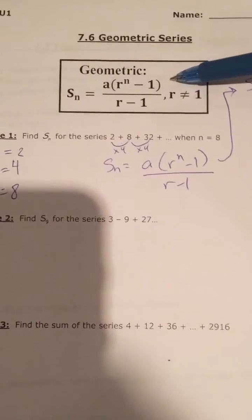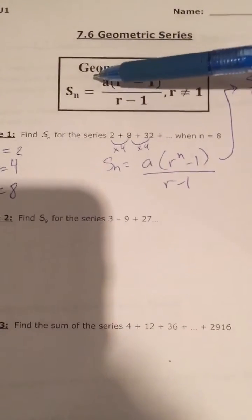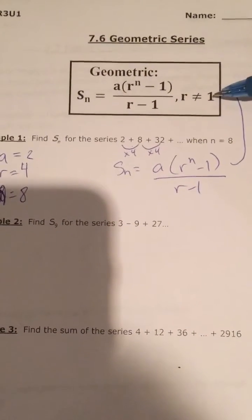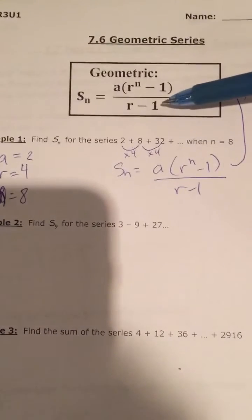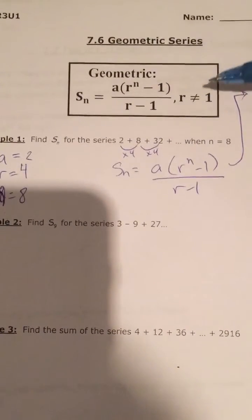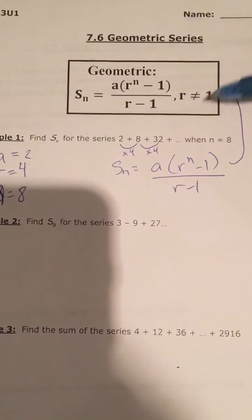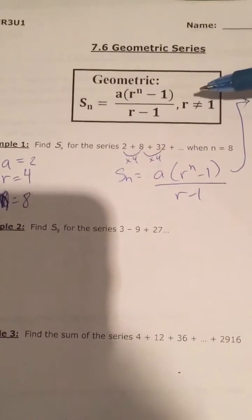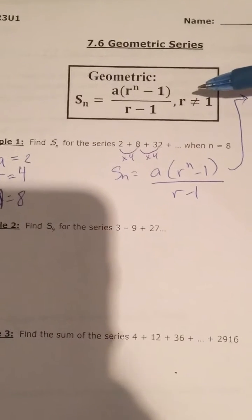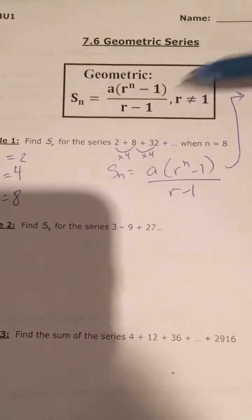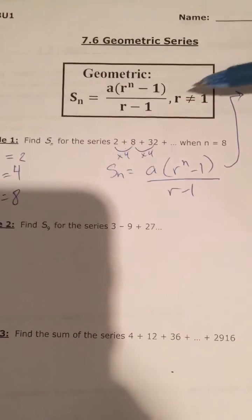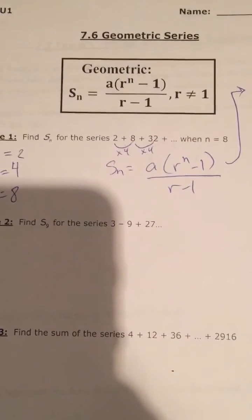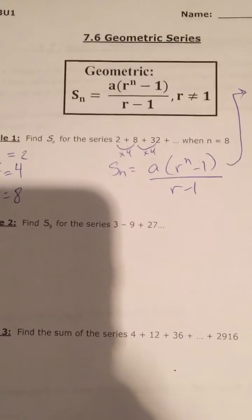This is the formula to figure out the sum of the first however many terms in a geometric series. It says r cannot be 1 because that would make the bottom 1 minus 1, which is 0. It also makes sense that r cannot be 1 because if r was 1, we'd be multiplying by 1 to get to the next number, which wouldn't change it, so it wouldn't be geometric.